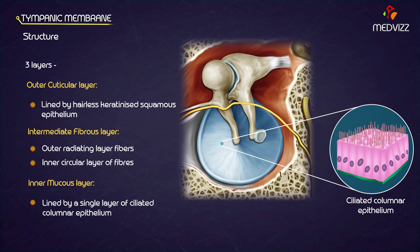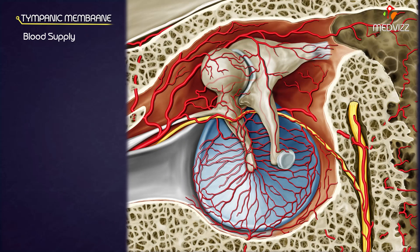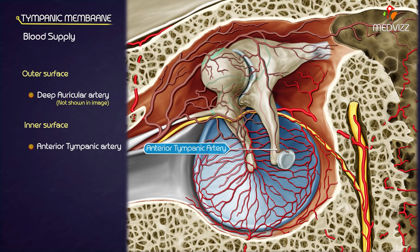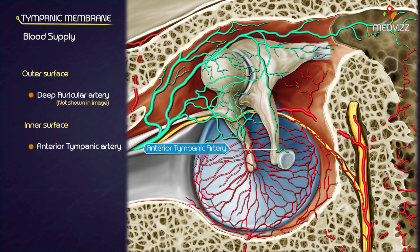The innermucosal layer is lined by a single layer of ciliated columnar epithelium. Blood supply: the outer surface is supplied by the deep auricular artery, a branch of the first part of the maxillary artery. The inner surface is supplied by the anterior tympanic artery, a branch of the first part of the maxillary artery, and the posterior tympanic artery, a branch of the stylomastoid artery.